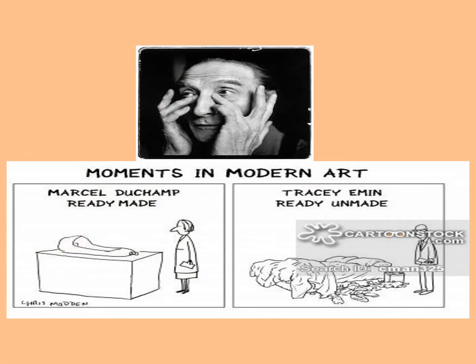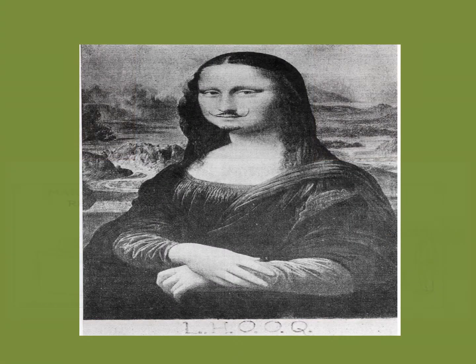Marcel Duchamp was actually the first artist to use a ready-made object, and his choice of a urinal was guaranteed to challenge and offend even his fellow artists. His scandalous L.H.O.O.Q. is an altered postcard reproduction of Leonardo da Vinci's Mona Lisa — Duchamp penciled a mustache and a goatee over Mona Lisa's upper lip and chin and retitled the artwork.